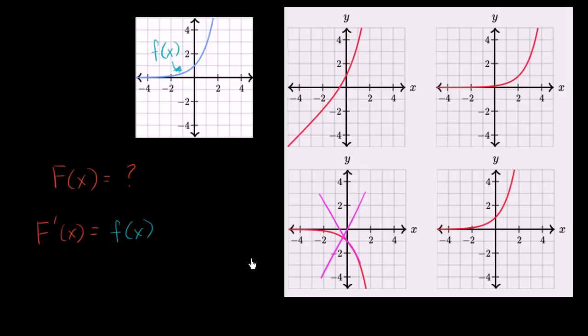Now what else do we know? Well, this is the derivative. This is telling us the slope of the tangent line. So for example, when x is equal to negative four,